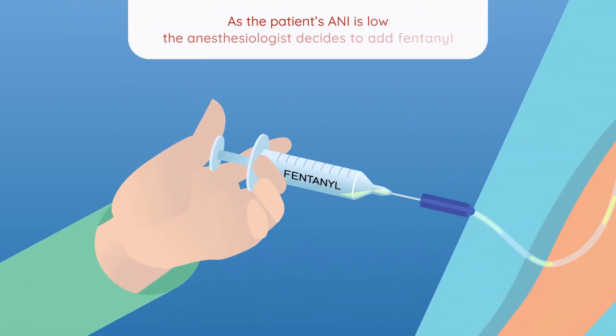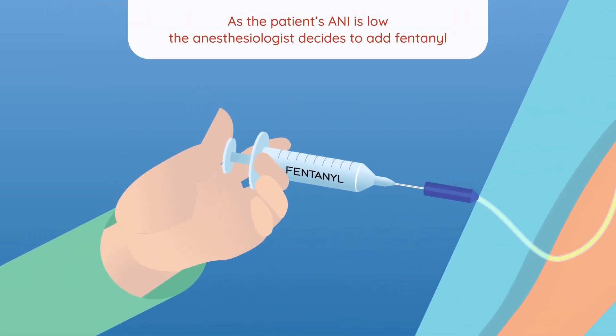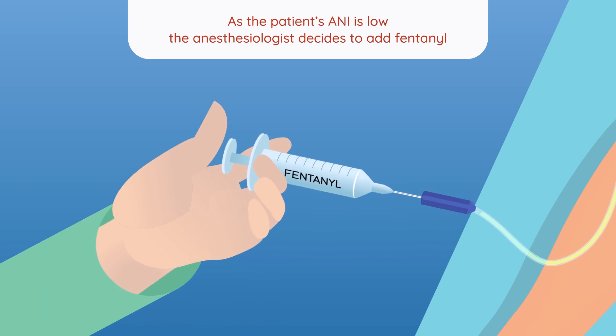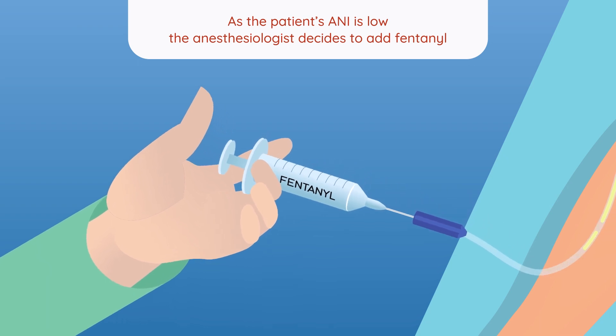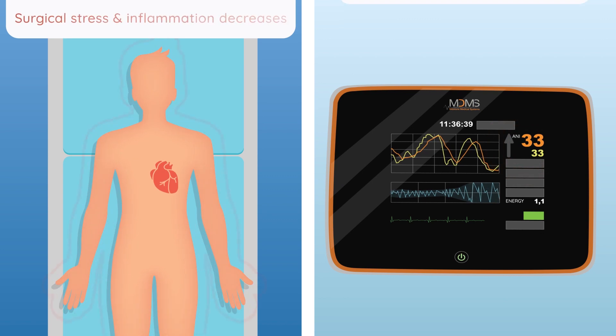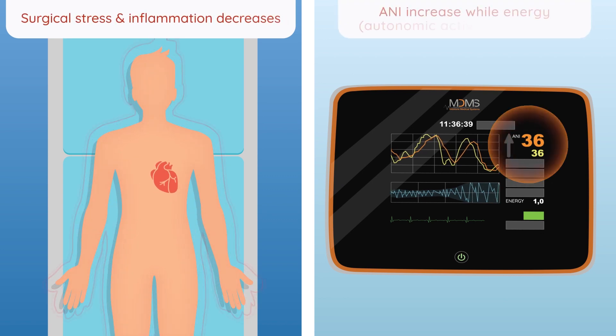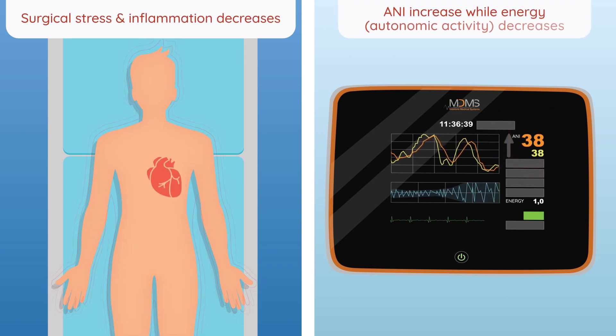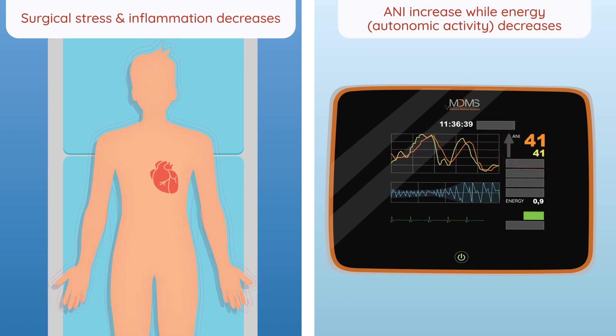Here the ANI shows evidence of nociception. By adding fentanyl, parasympathetic activity increases and the autonomic activity calms down.